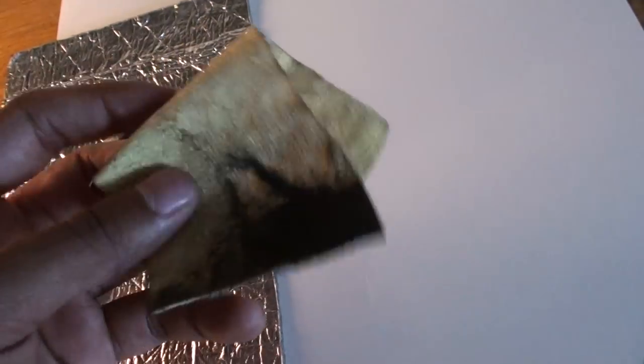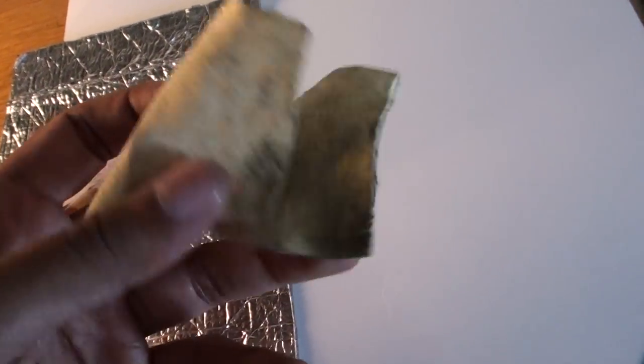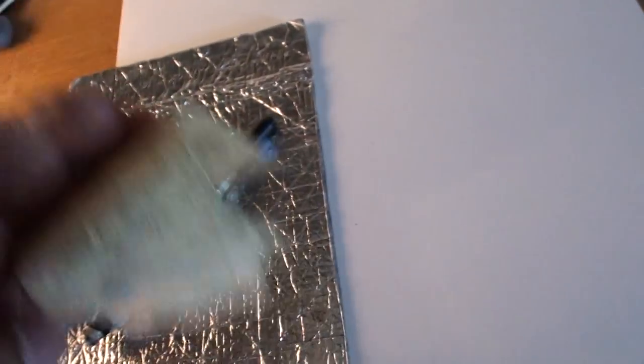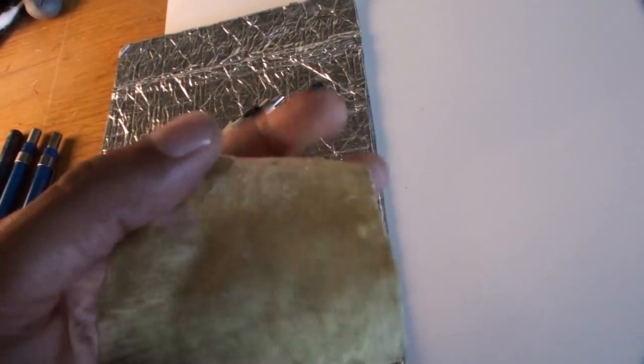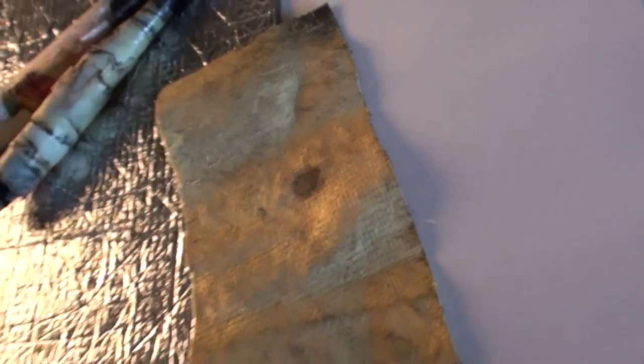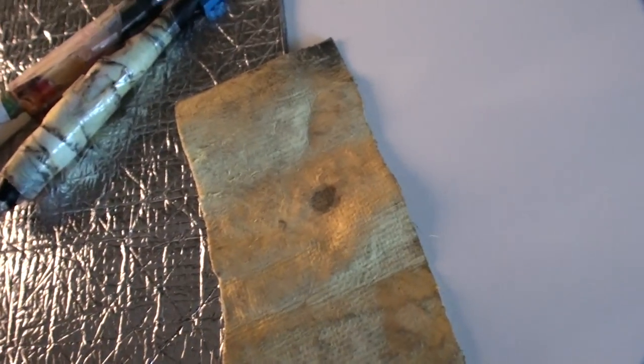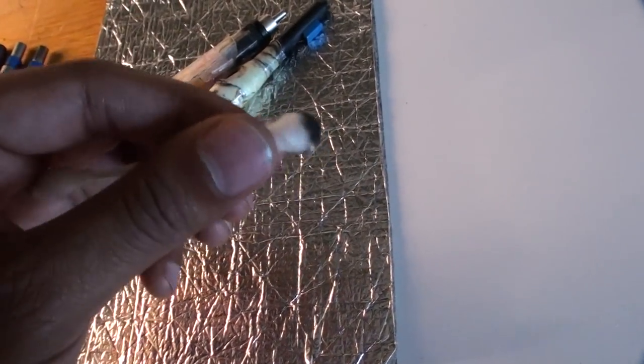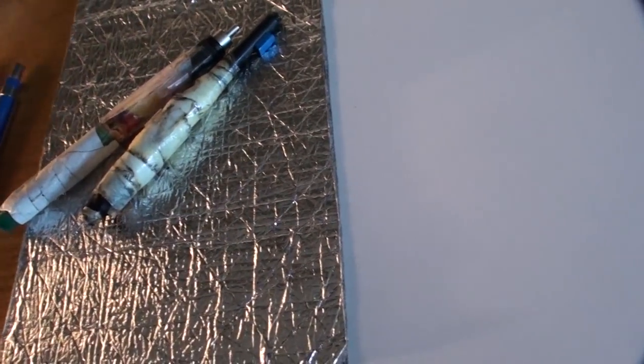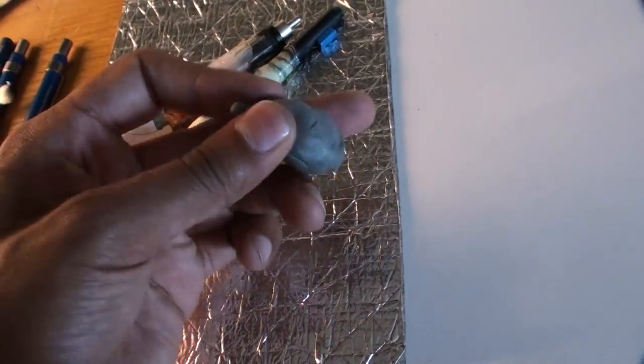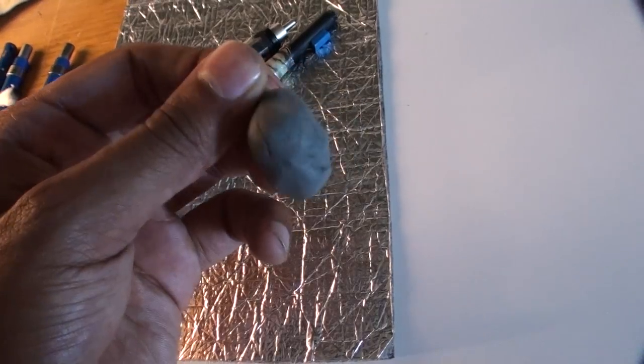These are called chamois towels. They're used for washing cars, but these are great for blending pencil. Or you could just use a regular Q-tip or tissue or anything like that. Then the kneaded eraser.